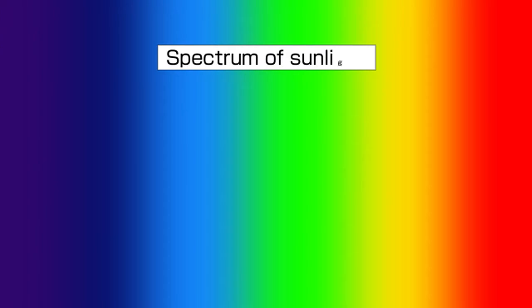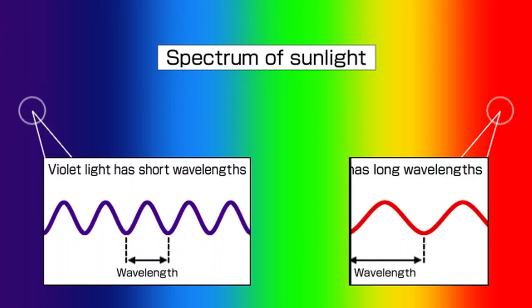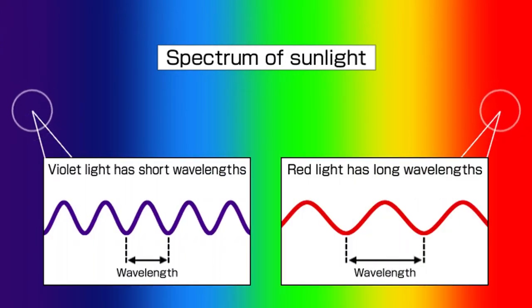Light has wave nature, and the color changes depending on the wavelength. Violet and blue have shorter wavelengths, and red has longer wavelengths.